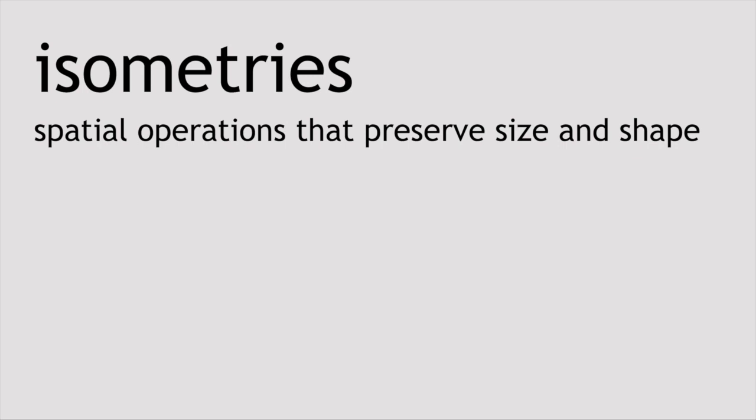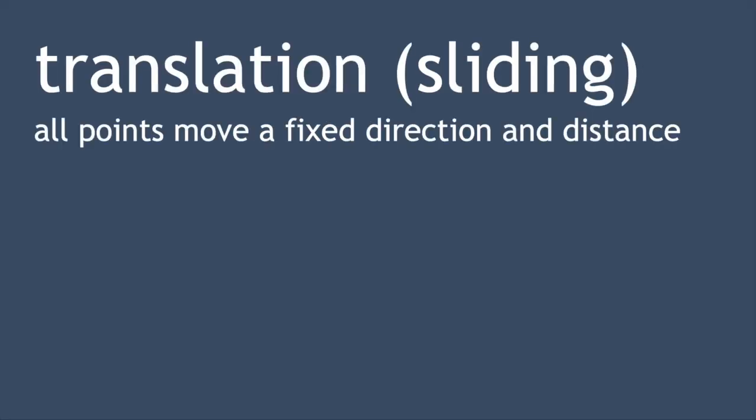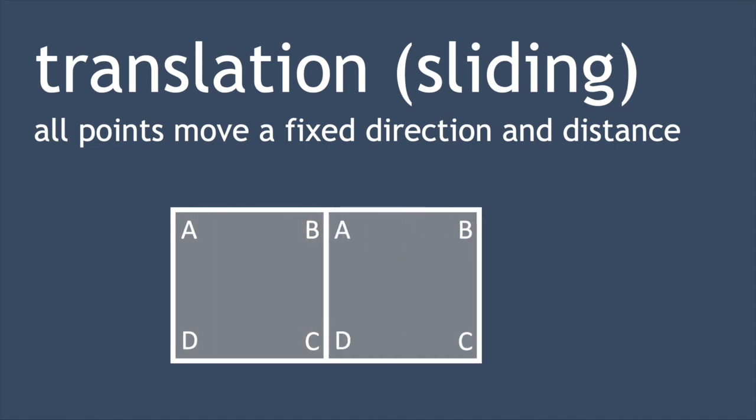So isometries are spatial operations that preserve size and shape. We can have translation or sliding, so we start with a square and then translate it so that opposite sides sit against each other. In doing so, every point of the square has moved a fixed direction and distance.